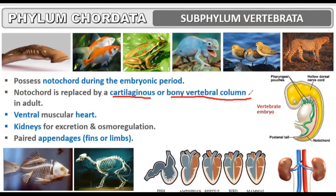The heart in vertebrates is ventral and is formed of cardiac muscles. The muscular heart is present on the ventral side of the body.